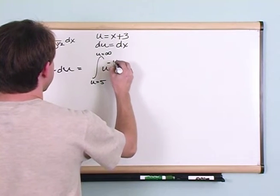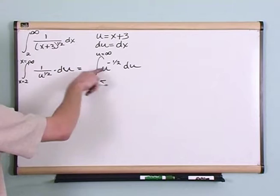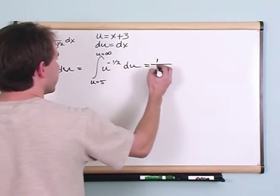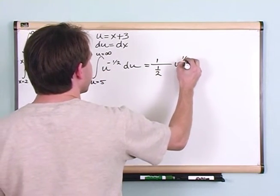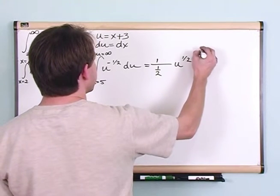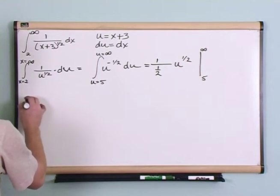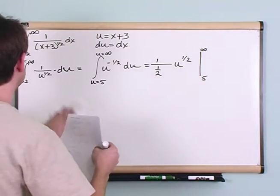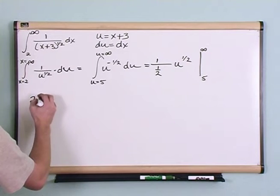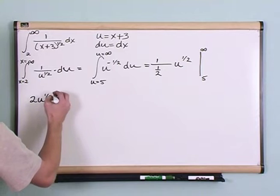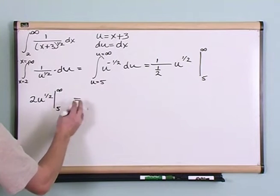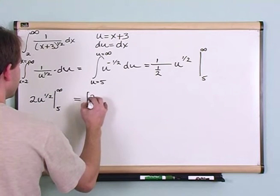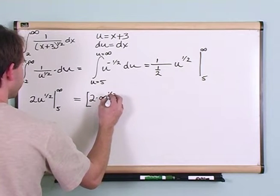So you'll have the integral from 5 to infinity of u to the negative one-half du, which is very easy to integrate. It's 1 over (1 + exponent), which is one-half, times u to the one-half, evaluated from 5 to infinity — using the limits we calculated. This simplifies to 2 times u to the one-half evaluated from 5 to infinity.